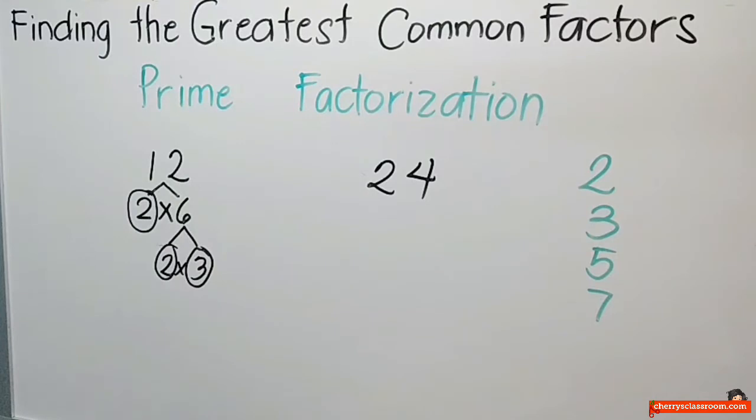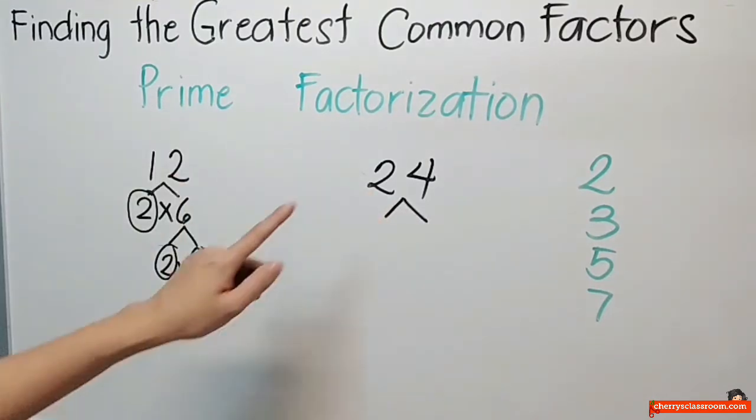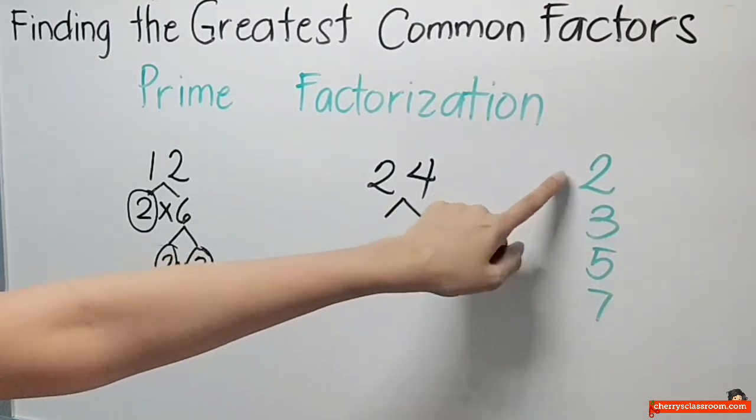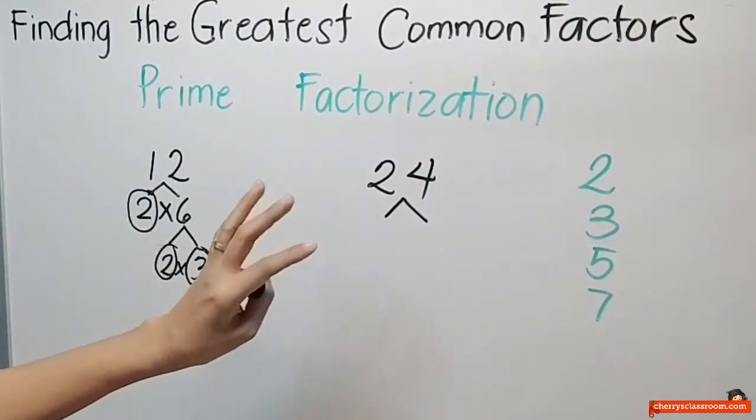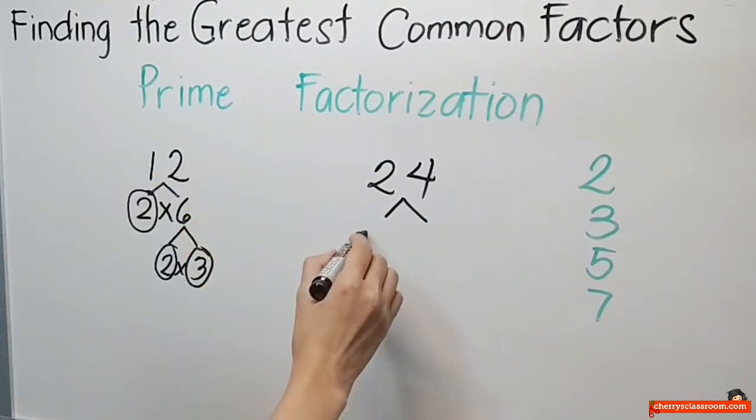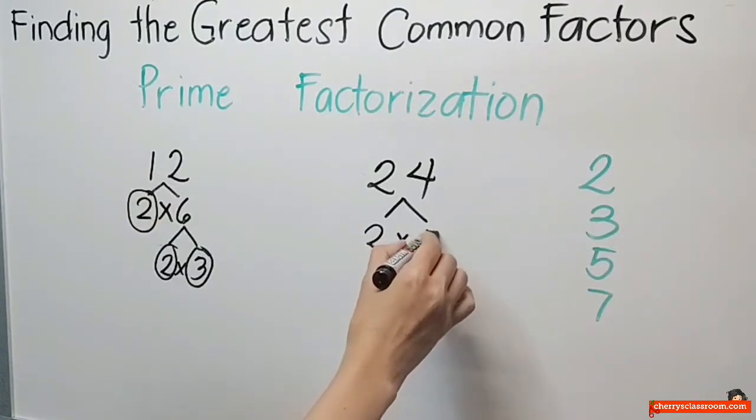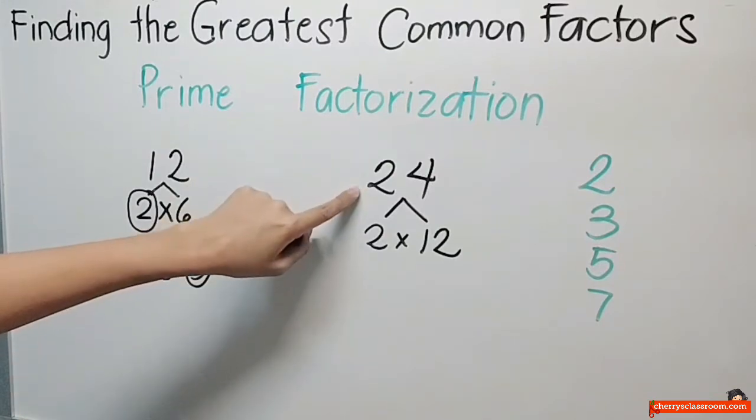Punta naman tayo sa 24. Mag-iisip ako ng prime number na ipang-divide ko sa 24. So, pipili lang ako dito. Pwede kong piliin to. Pwede kong piliin to. Basta as lang as pwede siyang i-divide sa 24. So, 2. Anong number yung multiply ko sa 2 na ang sagot ay 24? Sagot ay 12. So, 2 times 12. Ang sagot, 24.